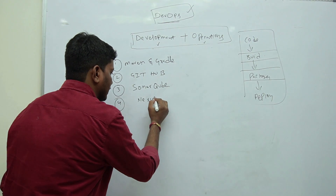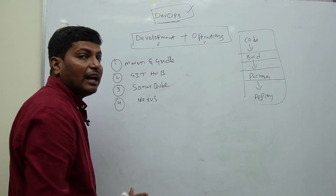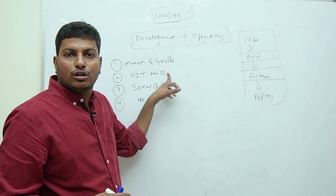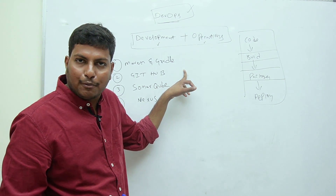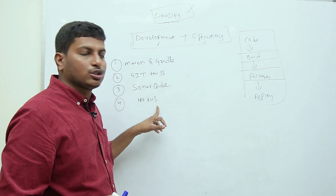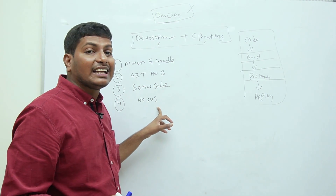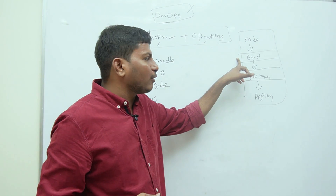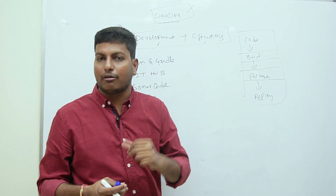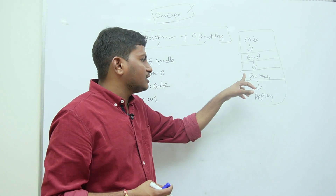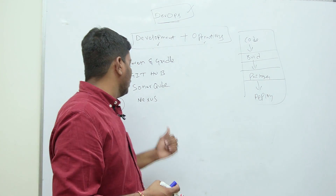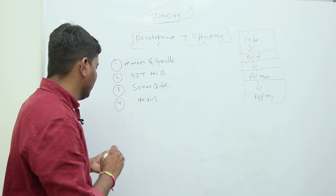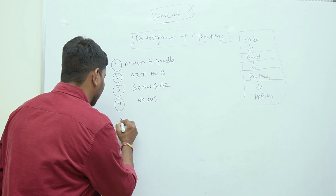Next is Nexus. Nexus is called an Artifactory Server. GitHub is used to store the source code of the project, while Nexus is used to store build artifacts. Once we build our project, we get a JAR file or WAR file. That JAR or WAR file is stored in the Nexus repository for backup purposes.